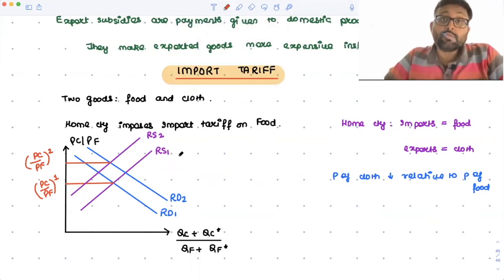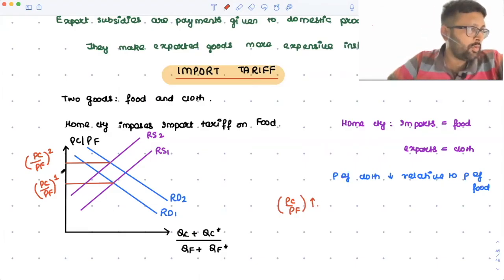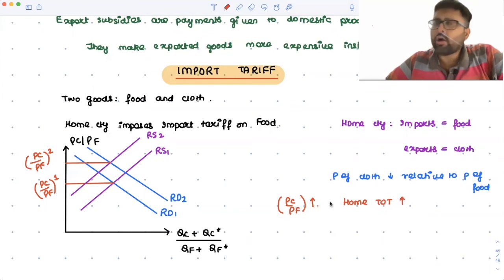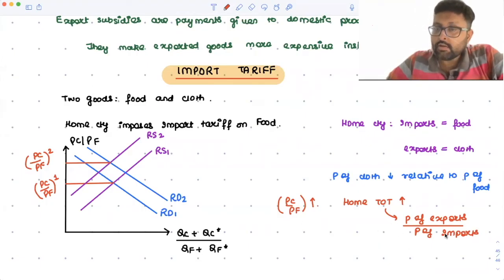So how is the terms of trade going to be affected? PC by PF — price of cloth over price of food — is going to increase. When PC/PF is increasing, basically what you are saying is that the home's terms of trade are increasing. How do you define terms of trade? Price of exports upon price of imports. So when PC/PF is increasing, home's terms of trade are increasing. This is the case for import tariff.